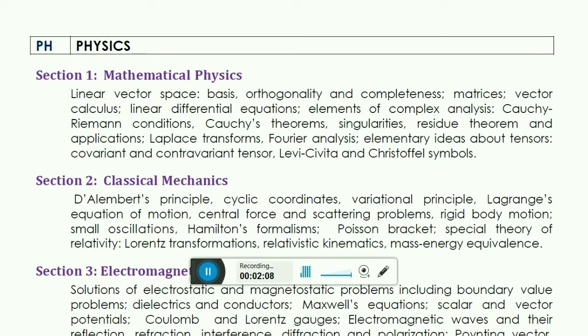In tensors, there is covariant and contravariant tensors, Levi-Civita symbol and Christoffel symbols. These two symbols are very important. I will upload some one page image of this portion, and I think that will cover everything about these two symbols. Later on, we go to classical mechanics.